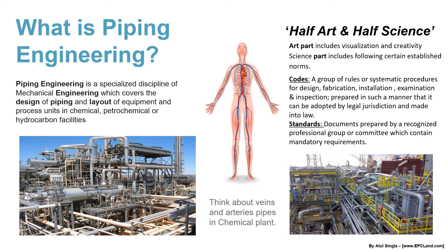With standards, if based on site conditions or design conditions we need to make a change, we can always discuss with the client and industry experts and make adjustments. But with codes, there is no scope — they must be followed and are legally binding. This is the basic difference between codes and standards. In summary, piping engineering is all about designing of pipe and layout of equipment.